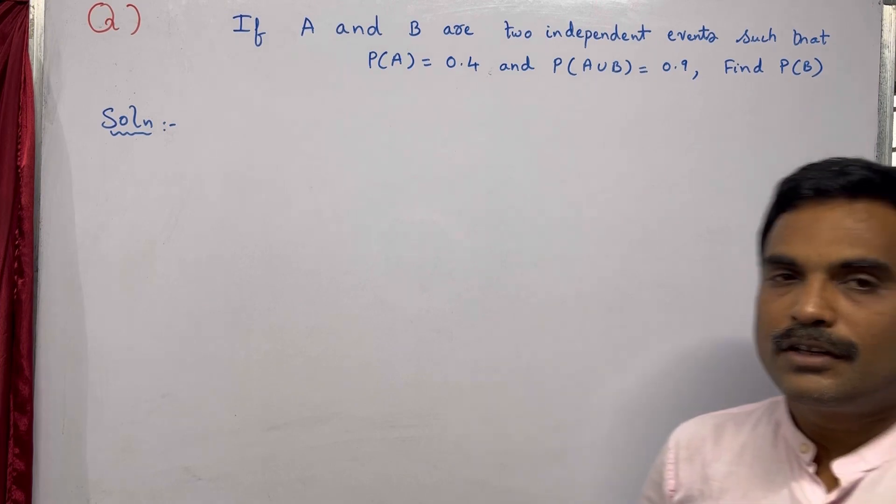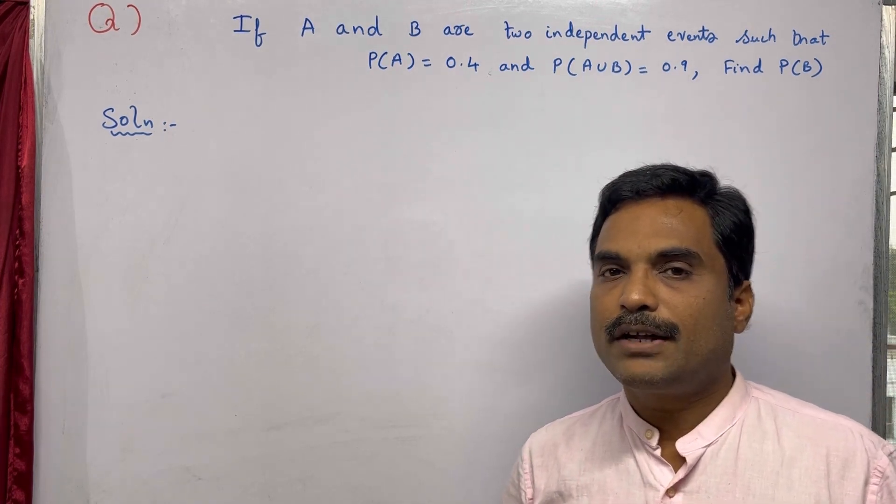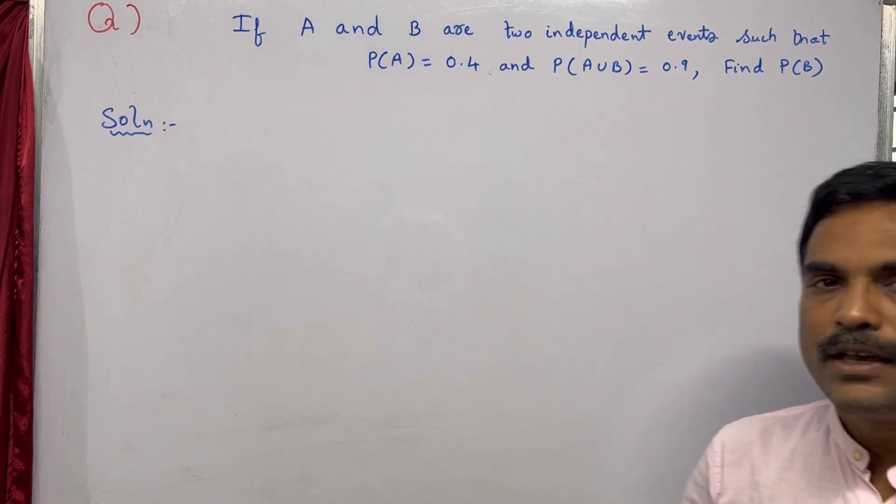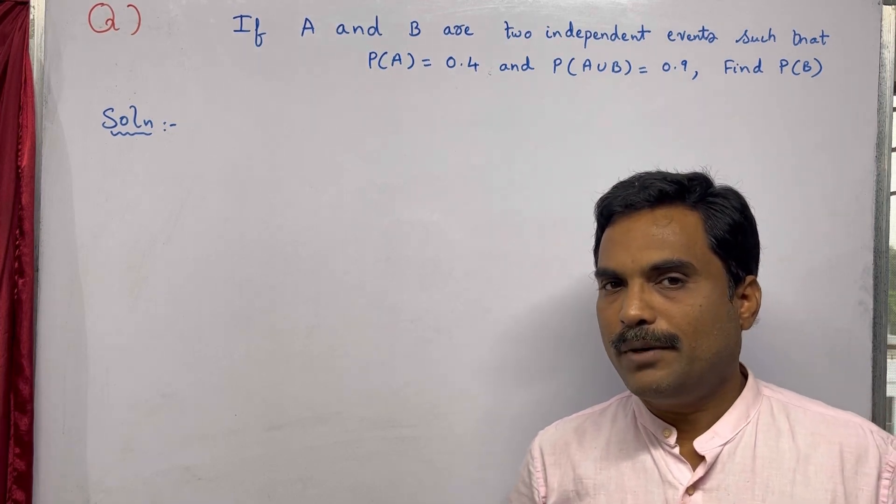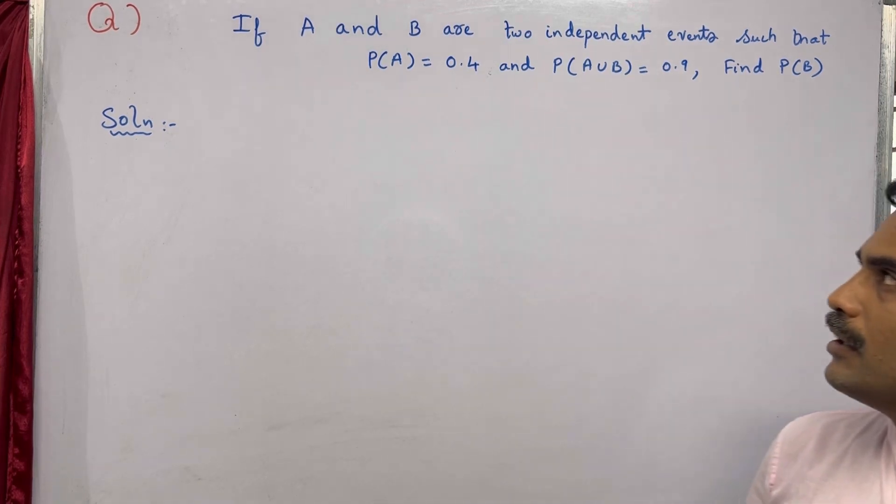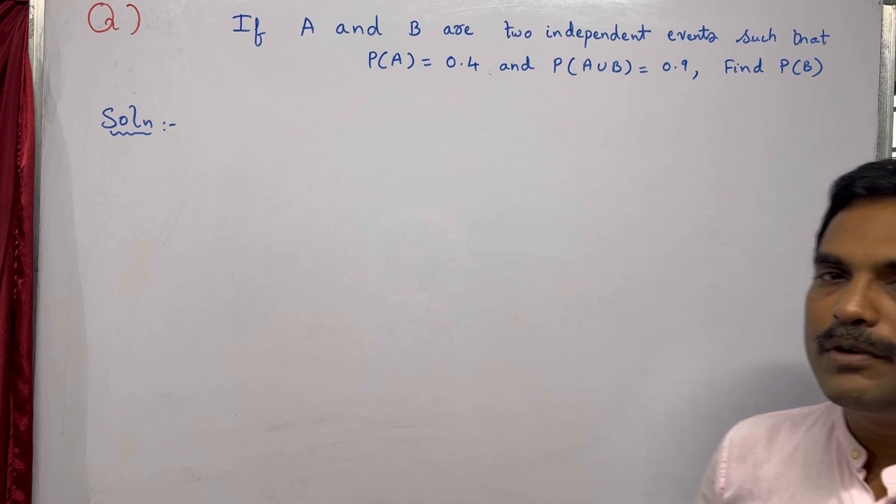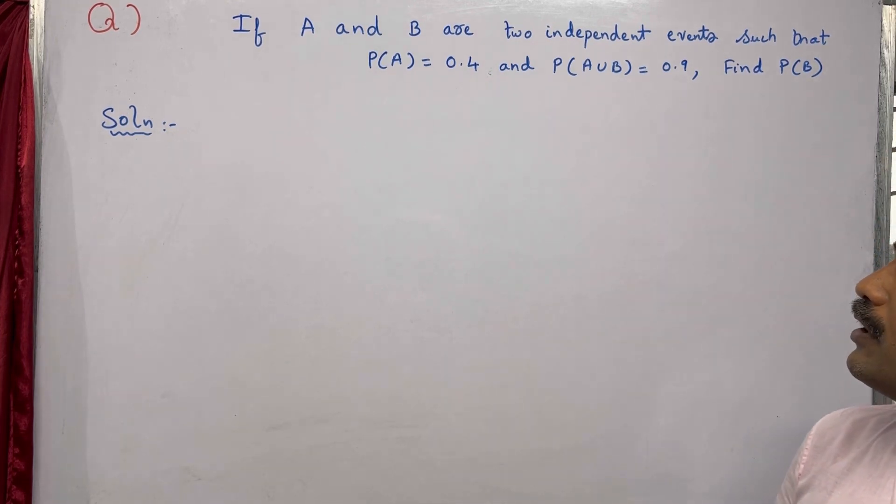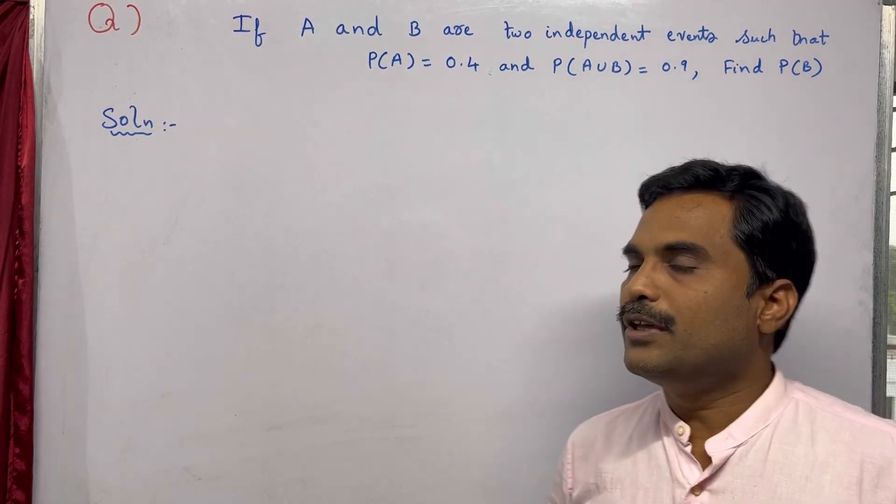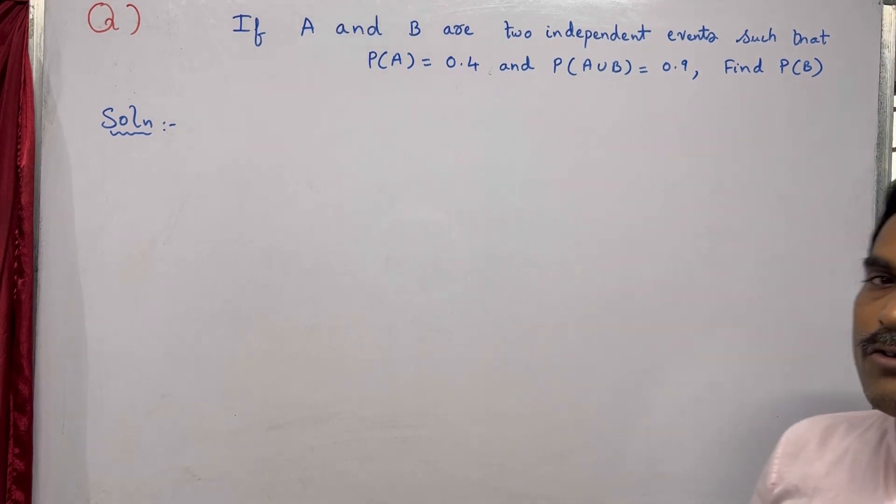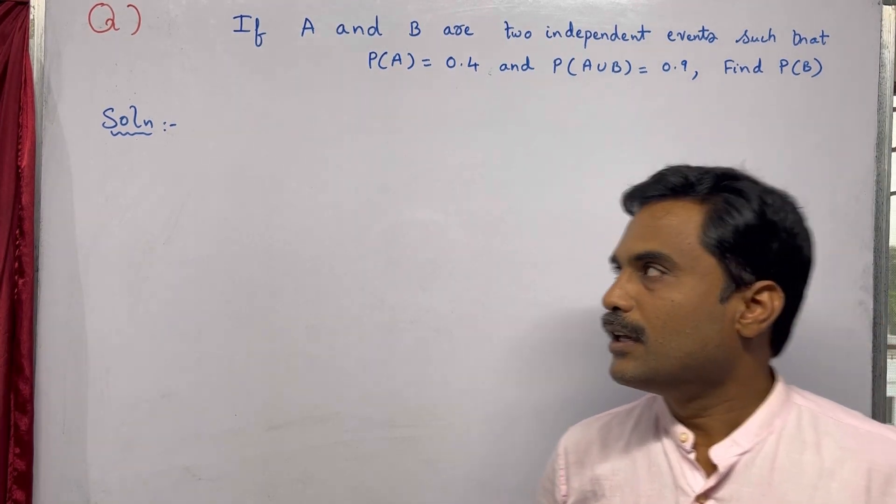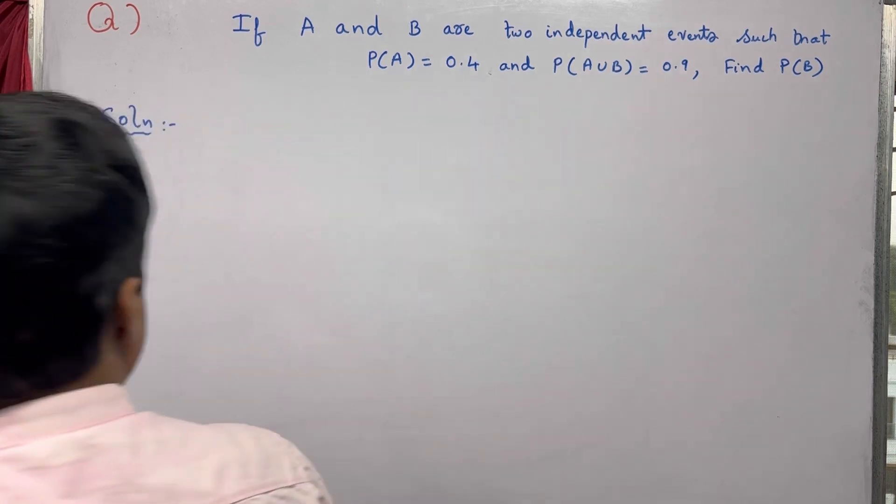In this problem, they have given two events A and B that are independent events, meaning P(A∩B) equals P(A) times P(B). They've given the values: probability of event A is P(A) = 0.4, and probability of A union B is also given. You need to find probability of event B. For this, we are going to use the P(A∪B) formula.